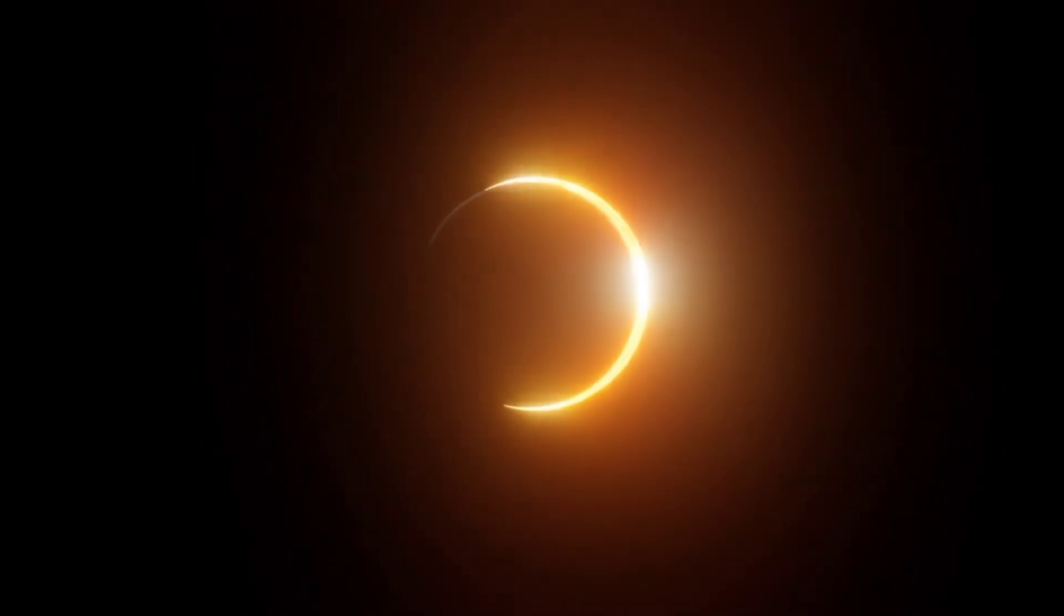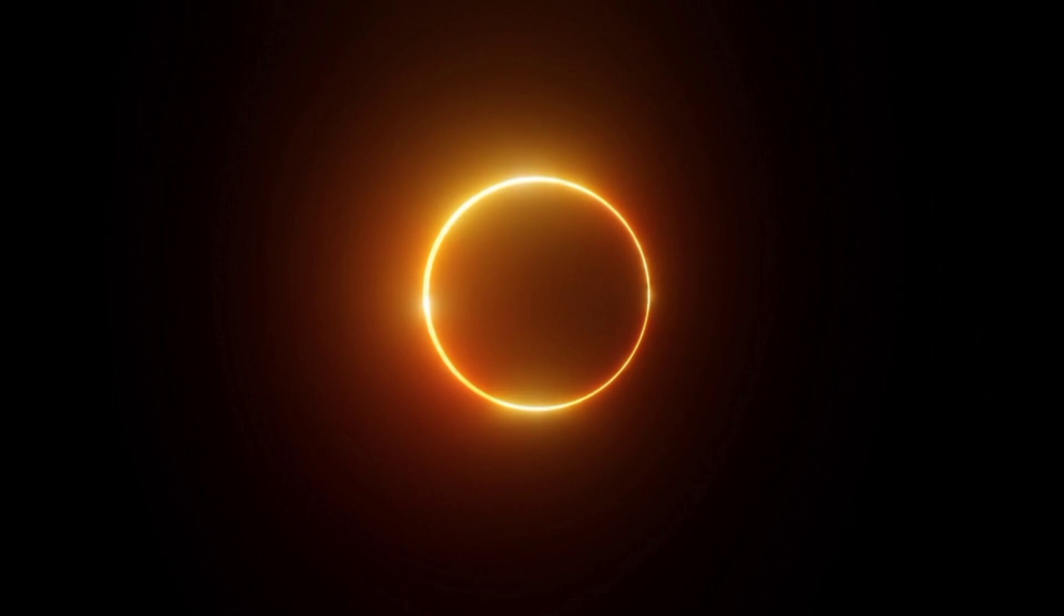And in an annular eclipse, the Moon appears smaller than the Sun, with a ring of sunlight at its edge.